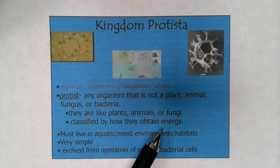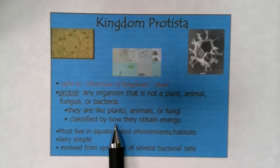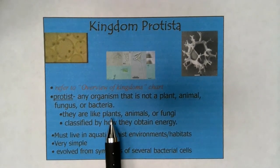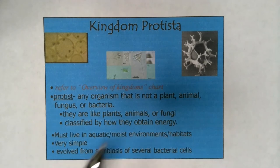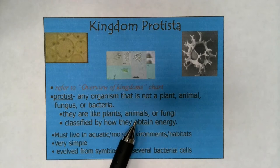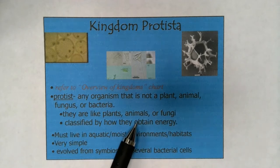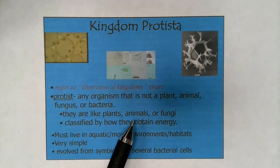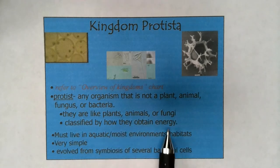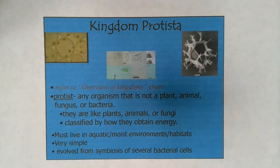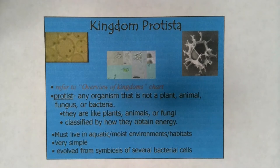Protists are said to be either like plants, like animals, or like fungus as far as how they obtain energy. Plants are autotrophic, so anything that's a plant-like protist is going to be autotrophic as well. Animals are consumers and so they're heterotrophic — animal-like protists are going to ingest whatever they're feeding on. And fungus are decomposers, so fungus-like protists serve the decomposer role in an aquatic ecosystem.